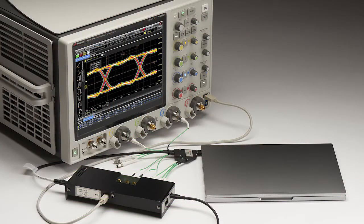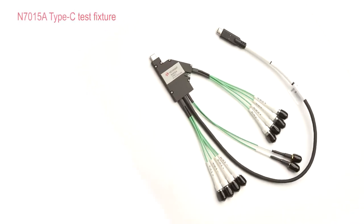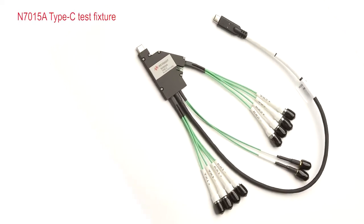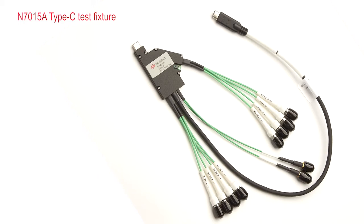The USB 3.1 Gen 2 10 gig standard has a very high bitrate signal. To be able to capture it, you need a very high quality signal integrity fixture. We have designed a custom Type-C test fixture for the highest signal integrity that allows you to look at signals up to 20 gigabits per second.